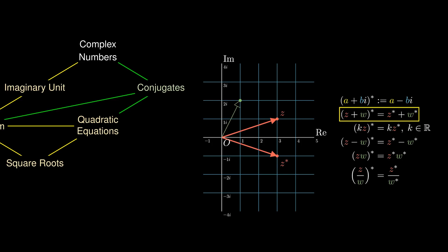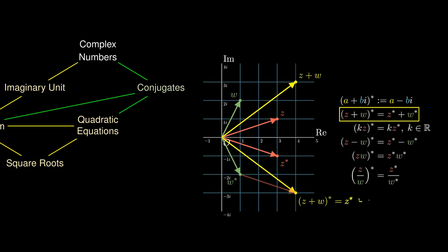Let's represent the complex number w and consider z + w, then take the conjugate of z + w. On the other hand, if we first take the conjugate of w and add z* with w*, we end up at the same location, which means (z + w)* = z* + w*.